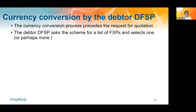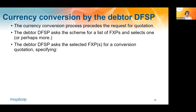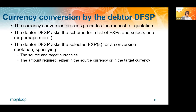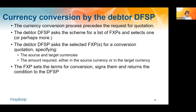Currency conversion will use the same structure as an ordinary transfer — an agreement phase followed by an execution phase. So if the debtor DFSP is doing the transfer, you do the currency conversion process request before you request for quotation. The debtor DFSP asks for a list of foreign exchange providers and selects one. It asks the selected foreign exchange provider for a conversion quotation, specifying the source and target currencies and the amount required in one or other of the currencies. The foreign exchange provider sets the terms in exactly the same way as the payee DFSP would for an ordinary transfer, signs them, puts an expiry on them, and returns the condition to the payer DFSP.